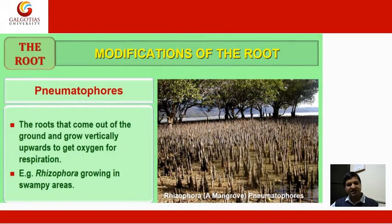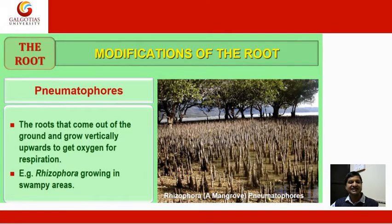Pneumatophores are roots that come out of the ground and grow vertically upward to obtain oxygen for respiration. An example is Rhizophora, growing in swampy areas — specially the mangroves in coastal regions or islands.